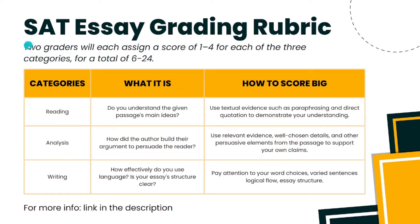The SAT will have two graders, who will each assign a score of 1 to 4 for each of the three categories, for a total of 6 to 24. What they want to see in your essay is your ability to understand the provided passage, write an argument for or against the passage, and then back up your stance using both your own and the passage's evidence and examples.